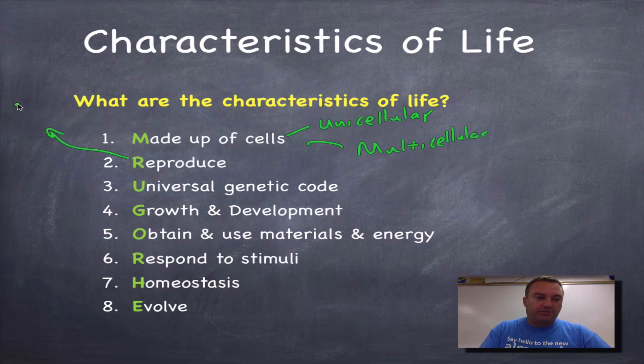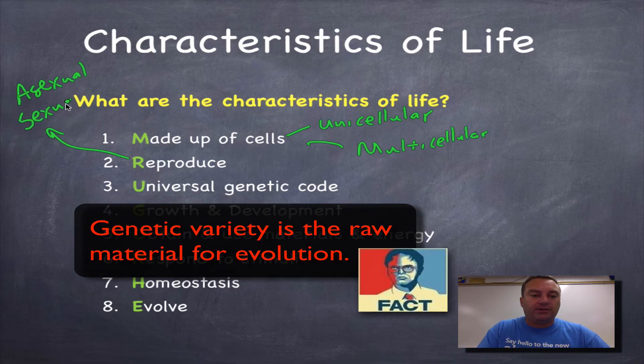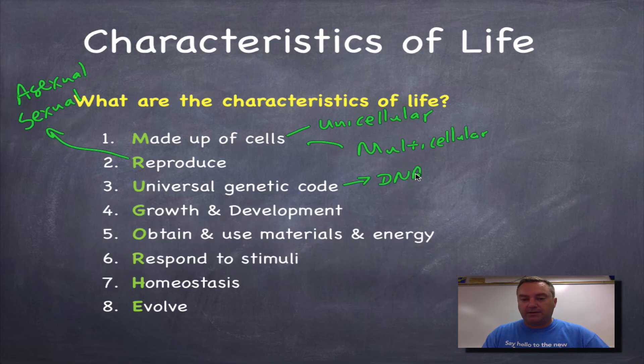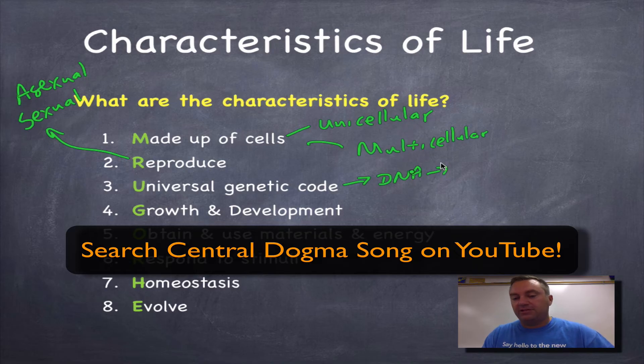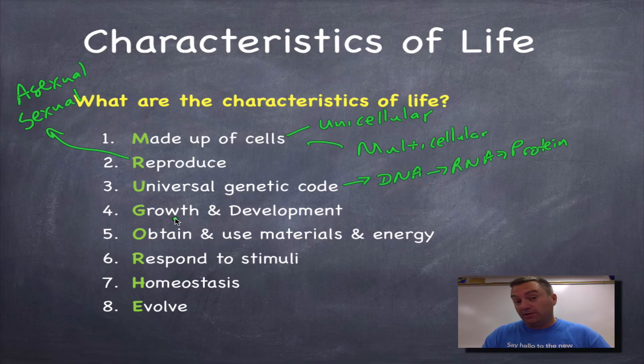Asexual reproduction does not give you genetic variety. Sexual reproduction will give you genetic variety. Genetic variety is the raw material for evolution. Universal genetic code. That would be DNA. And if you remember the central dogma of biology, DNA to RNA to protein. All living things use that pathway. Growth and development. Grow means you add more cells to yourselves. Development means that you're going to change form.